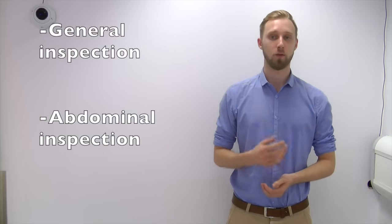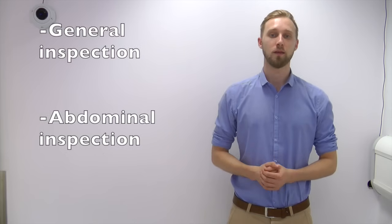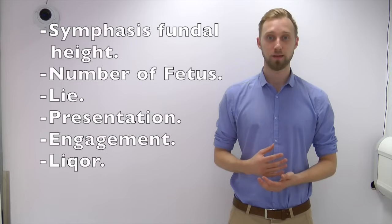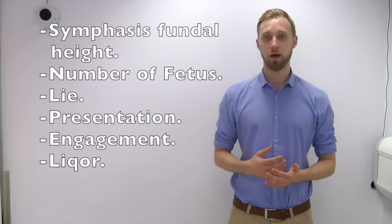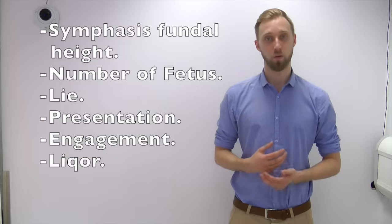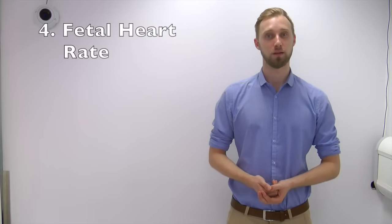Number two: describe inspection. Firstly describe her in general, and then describe the abdomen. Number three: describe the uterus — describe the symphysis fundal height, the number of foetuses, the lie, the presentation, engagement and the quality of the lie core. Number four: assess the foetal heart rate using a Pinnard stethoscope.